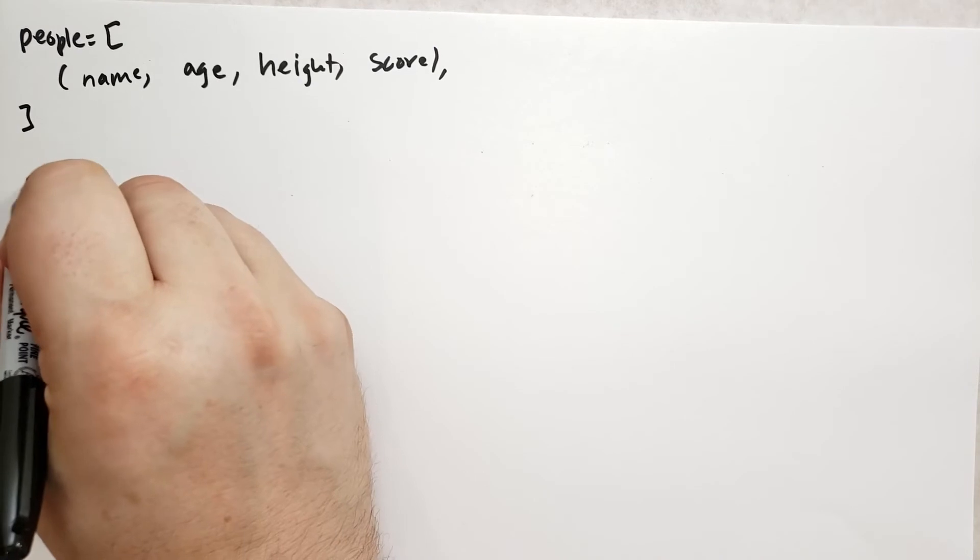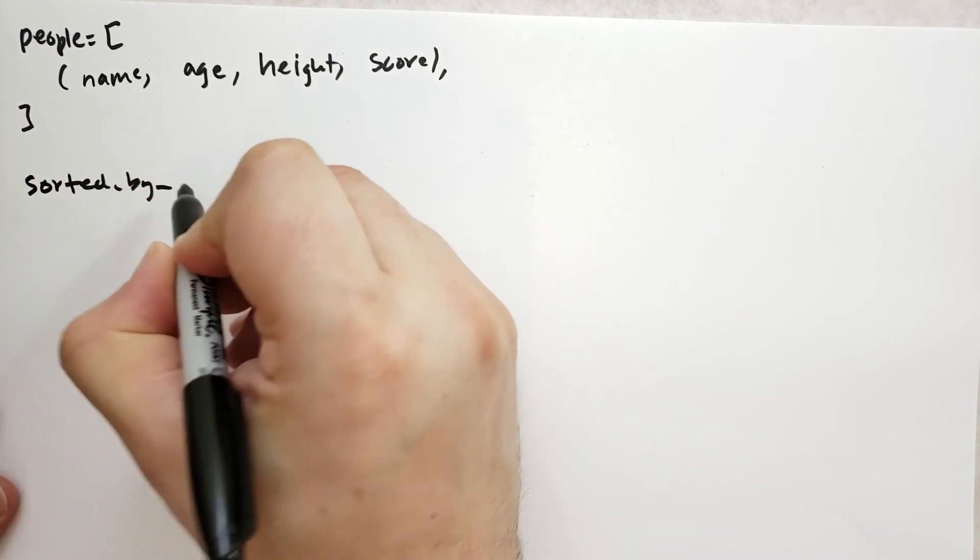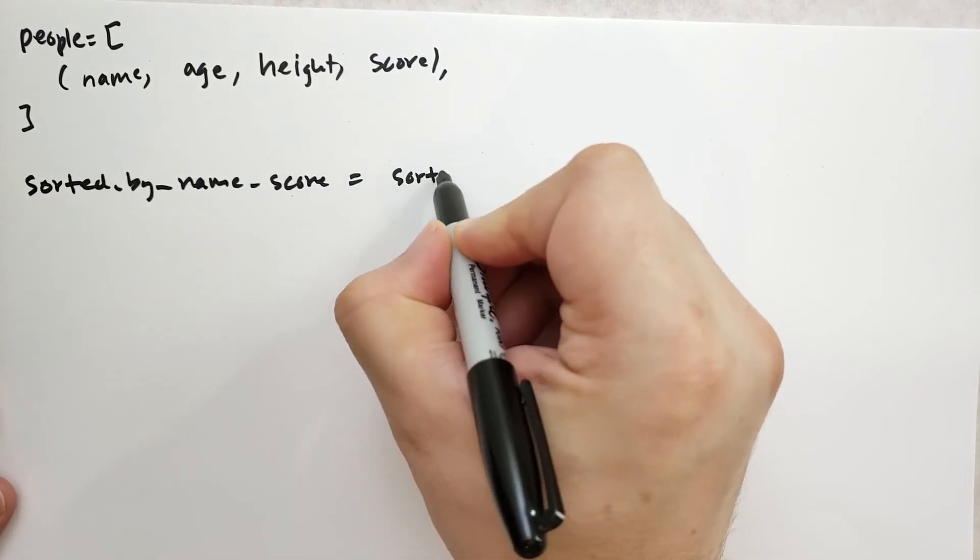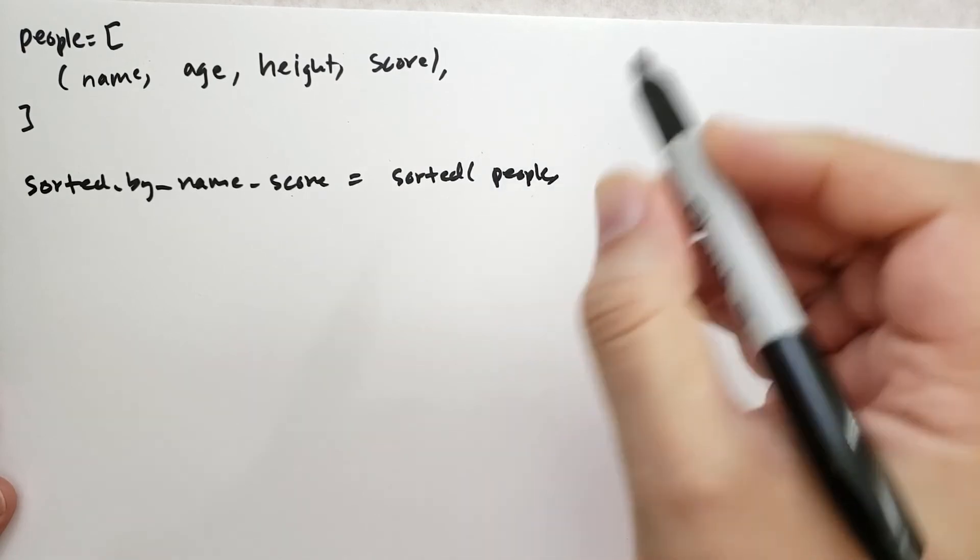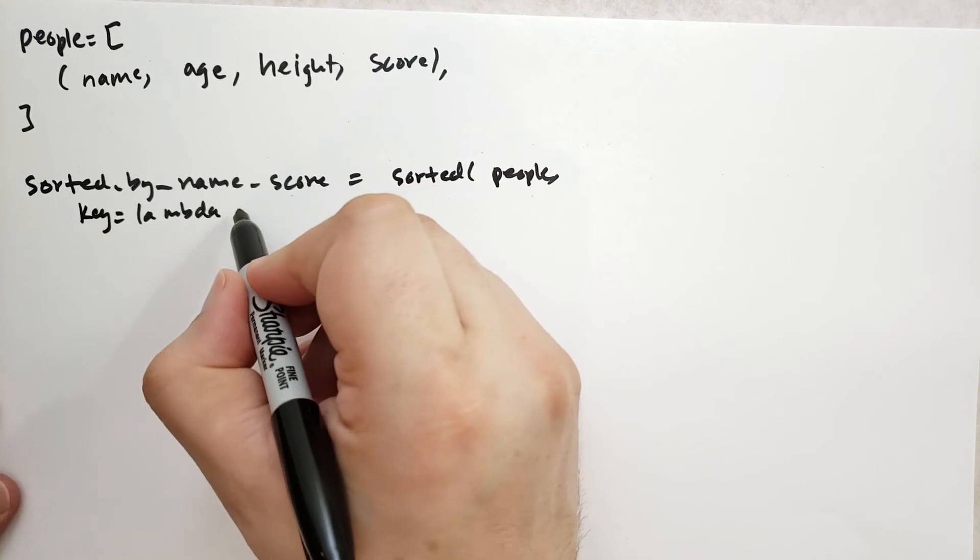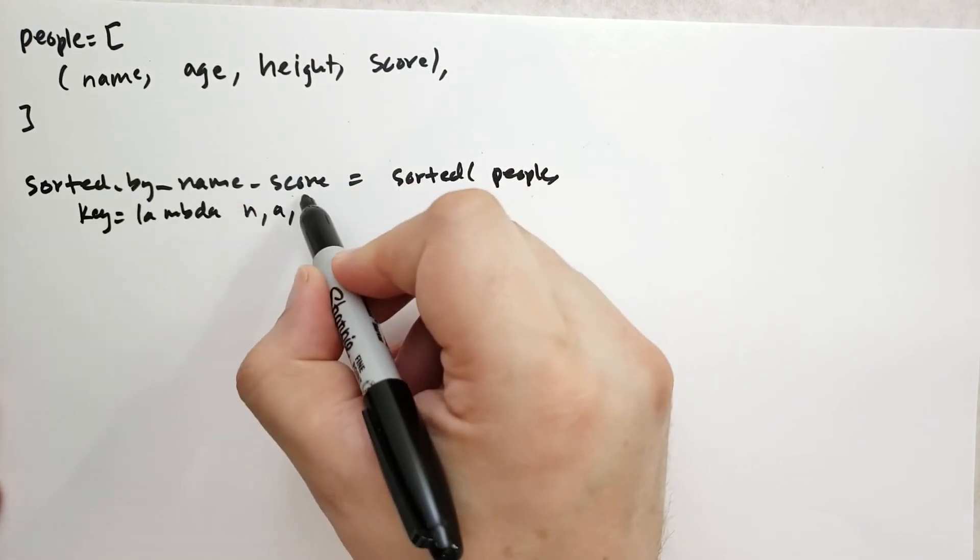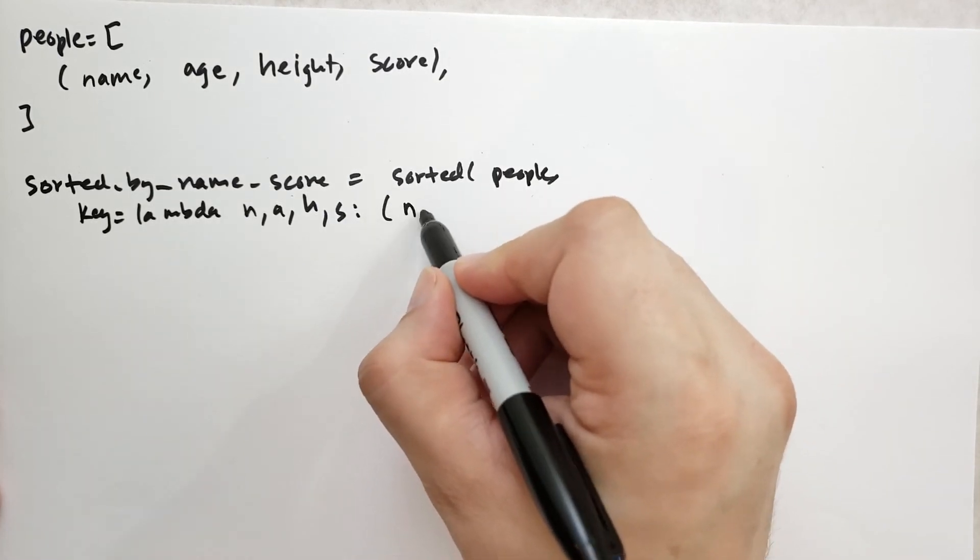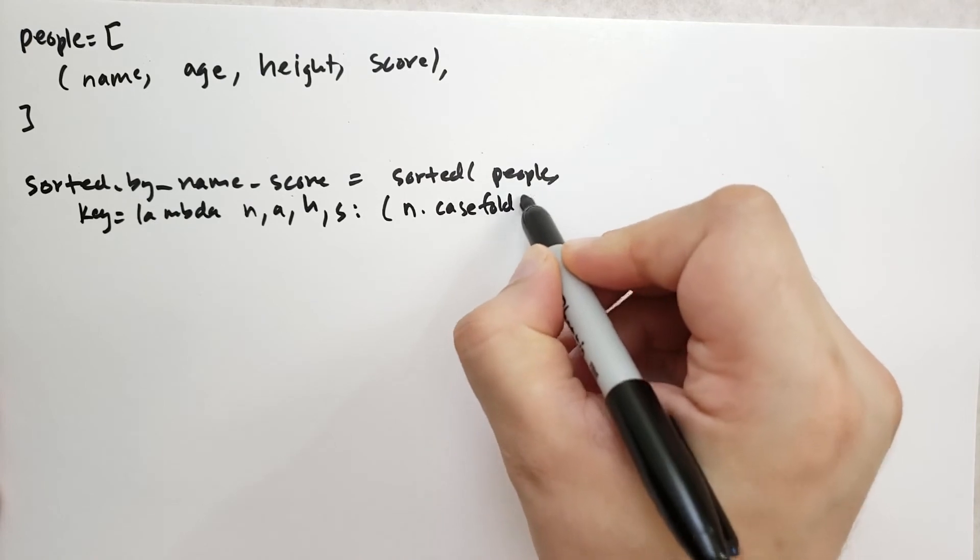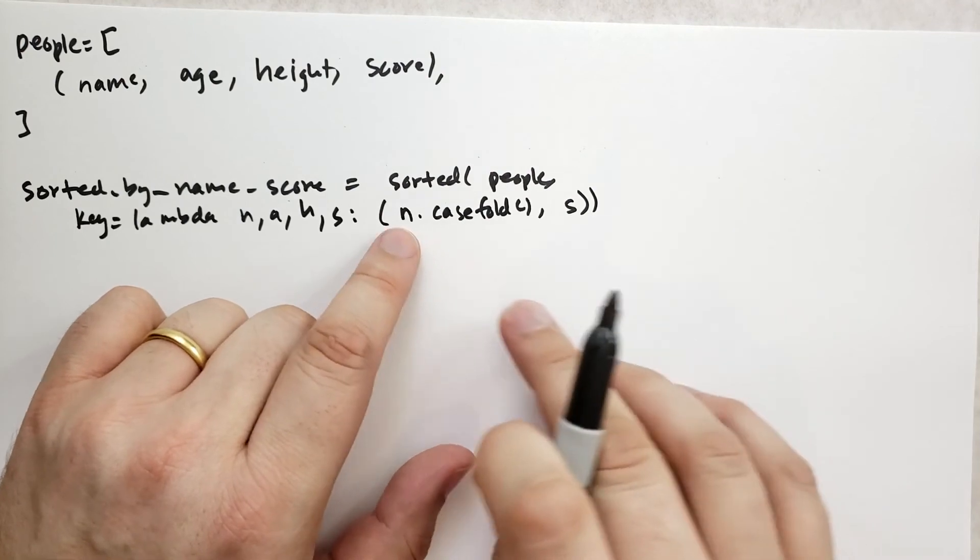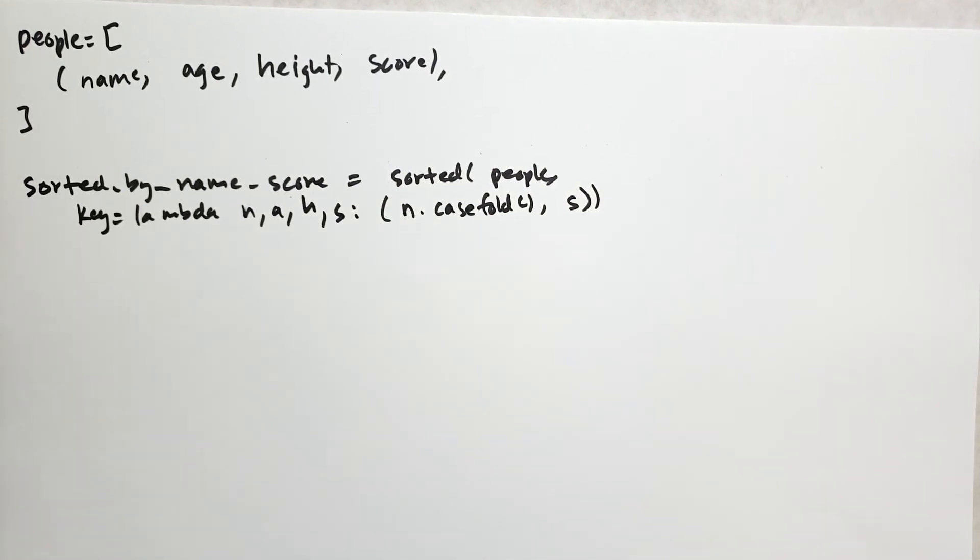One way we can do this is we could say that sorted by name and score equals sorted. We start with people and we're going to use the key function as follows: the lambda is going to take name, age, height, and score, and we're going to return a tuple with their name but it has to be case folded, and then we're going to follow that by their score. This should sort them - if their name compares the same, then it'll compare by their score.